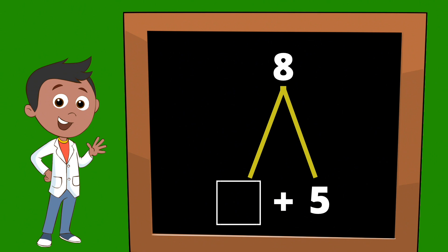Once again, we're going to start with what we know. We know that the right side of our mountain is five, so we're going to add five circles: one, two, three, four, five. We don't know what's on the left side of our Math Mountain, but we do know our total is the number eight. So we're going to count on from five, adding more circles to the left side until we get to the number eight: six, seven, eight.